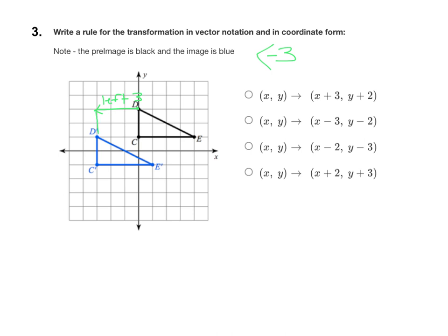Then, vertically, we have to go down two. So my vertical component is negative two.